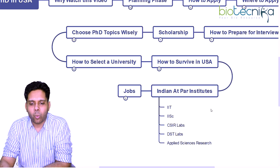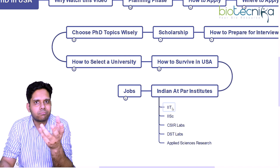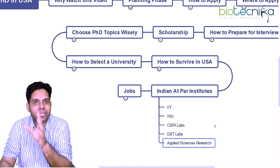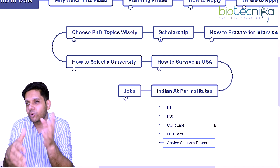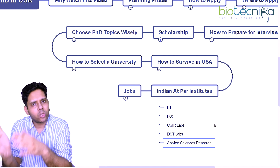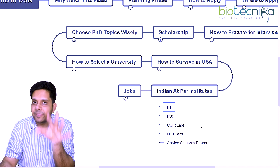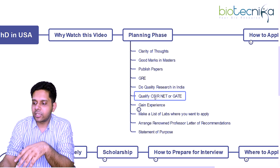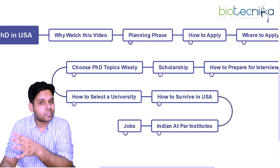Some students ask: why do I really need to go to the USA? You can do a PhD in India too. There are institutes at par — if you do your research in IITs, IISc, CSIR labs, DST labs, or applied sciences research labs, that's also at par. After your PhD here, you can still go for postdoc in the USA. If your PhD is from IIT, IISc, CSIR, or DST labs in applied sciences, it's going to help you. If you have a CSIR-NET qualification, it definitely helps — both for a PhD in India and abroad. That's a win-win situation.